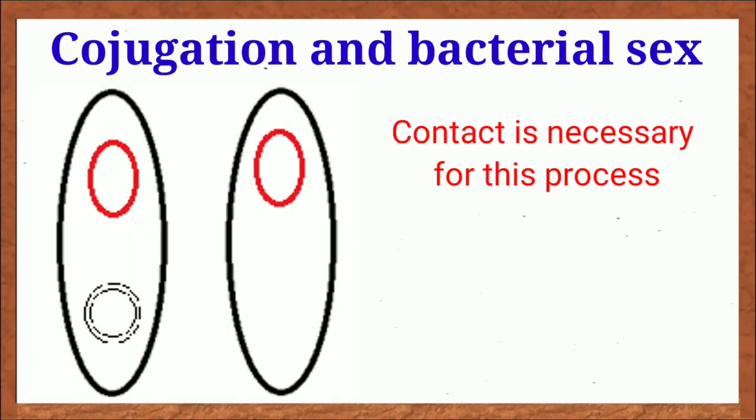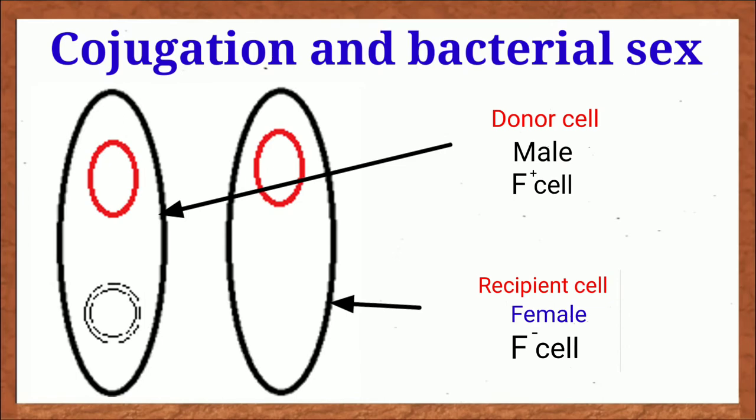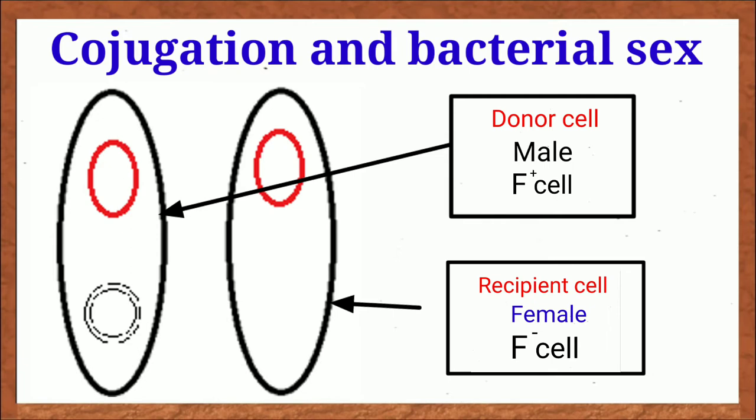Contact is necessary for this process which is mediated by sex pili synthesized by the donor cell. They also possess a fertility factor called F plasmid that is actually transferred to the recipient. Here donor cells are called male or F plus cells and recipient cells are called F minus or female. The F minus cells do not contain any F plasmid.